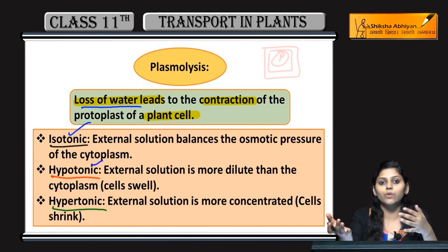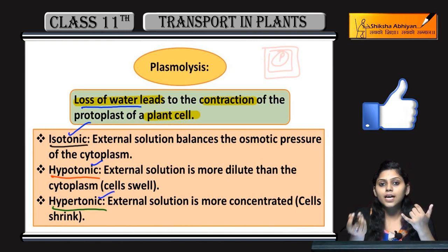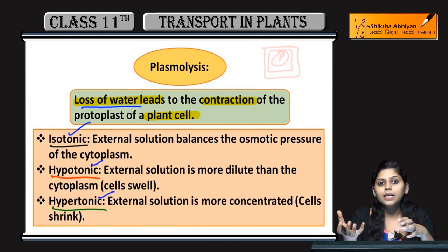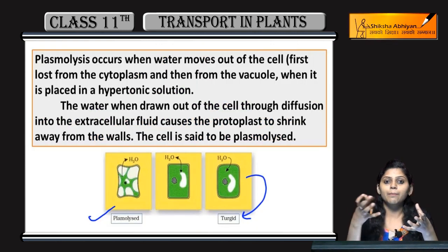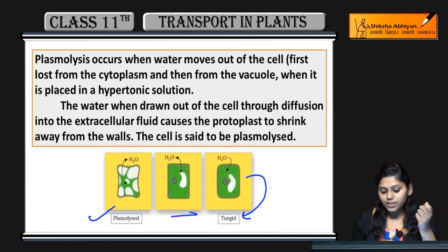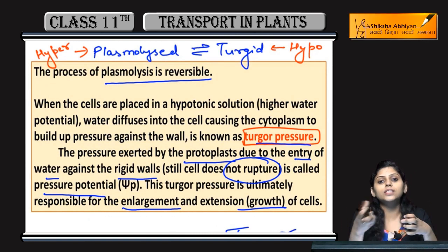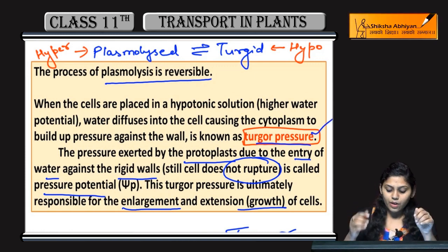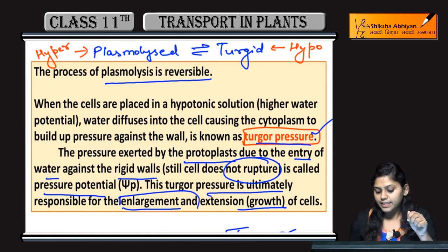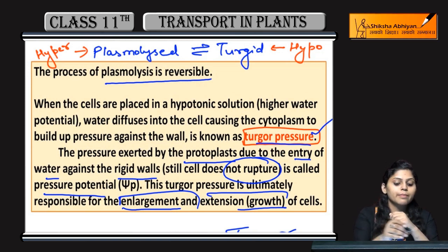Yeh tha plasmolysis. Jab bahar wala solution zhaadha concentrated hota hai, cell mein zhaadha paani hota hai as compared to outside environment, tab plasmolysis ya turgid cell ki conditions dekhte hain. So this was plasmolysis.